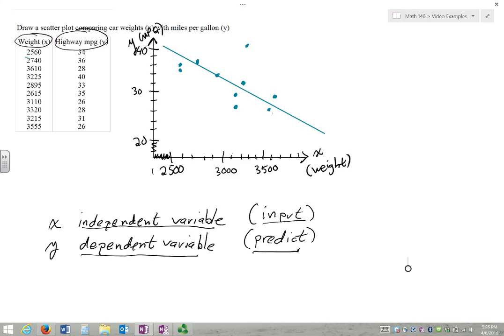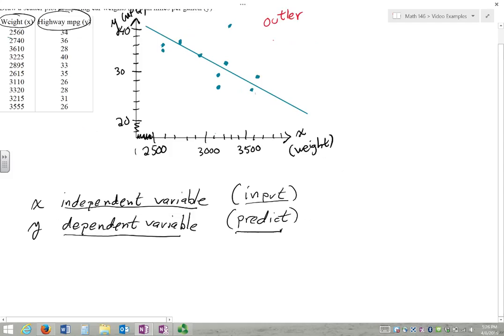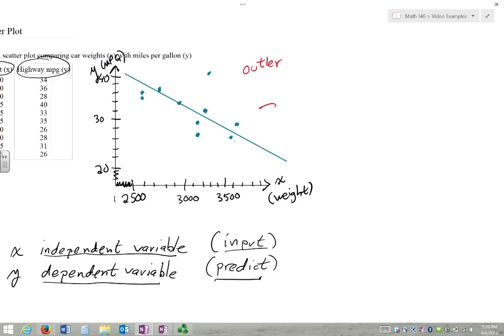Just because the graph is going downward doesn't mean there's not a relationship. There does appear to be somewhat linear relationship. We do have an outlier over here. And all the others seem to fall roughly along that line. And so we might conclude what we probably think already in that a heavier car is going to get fewer miles per gallon.